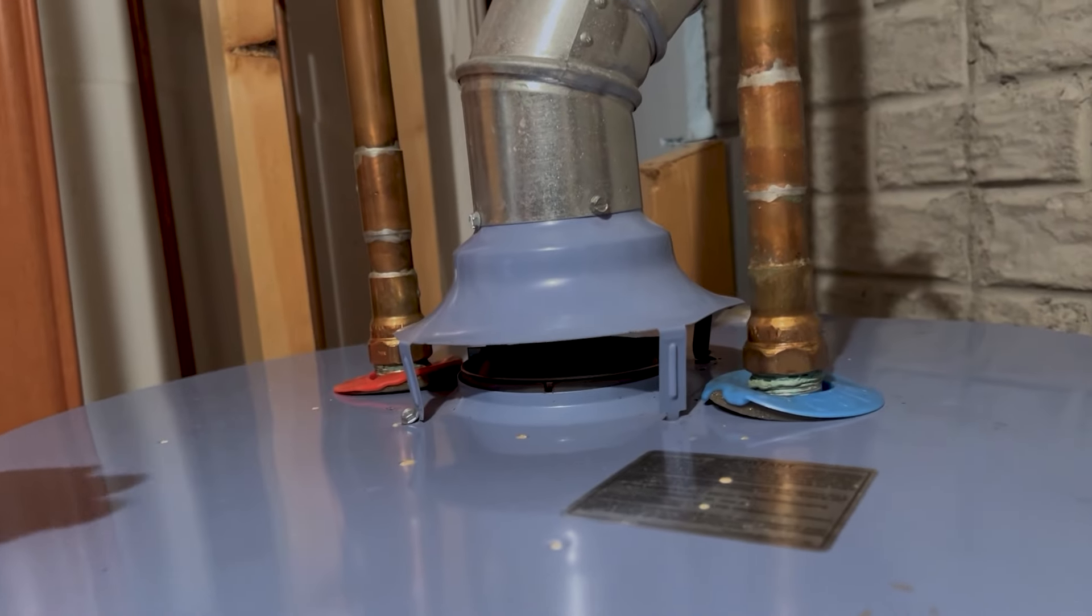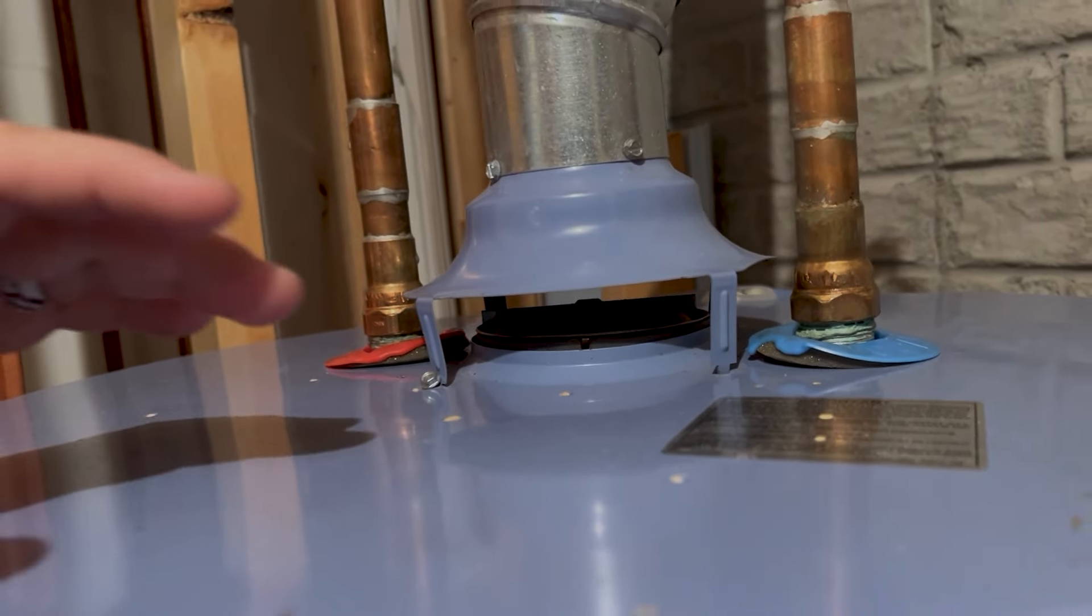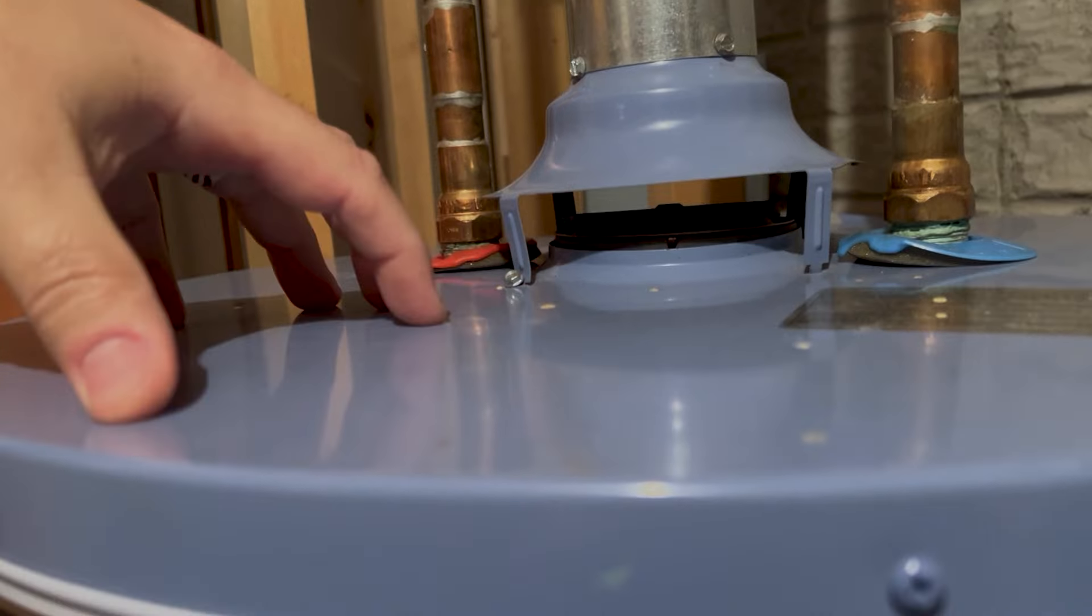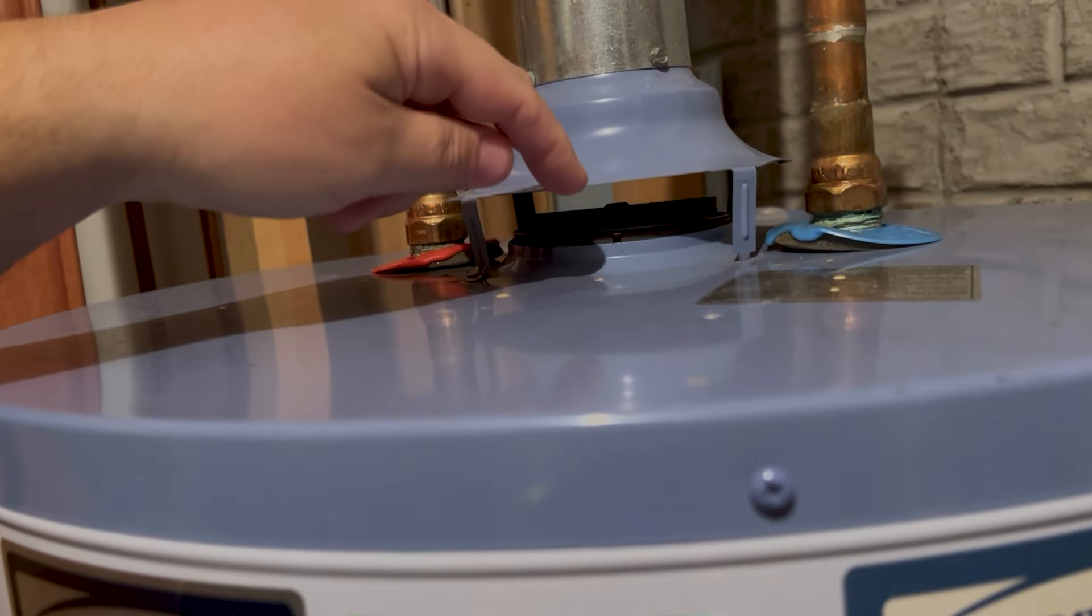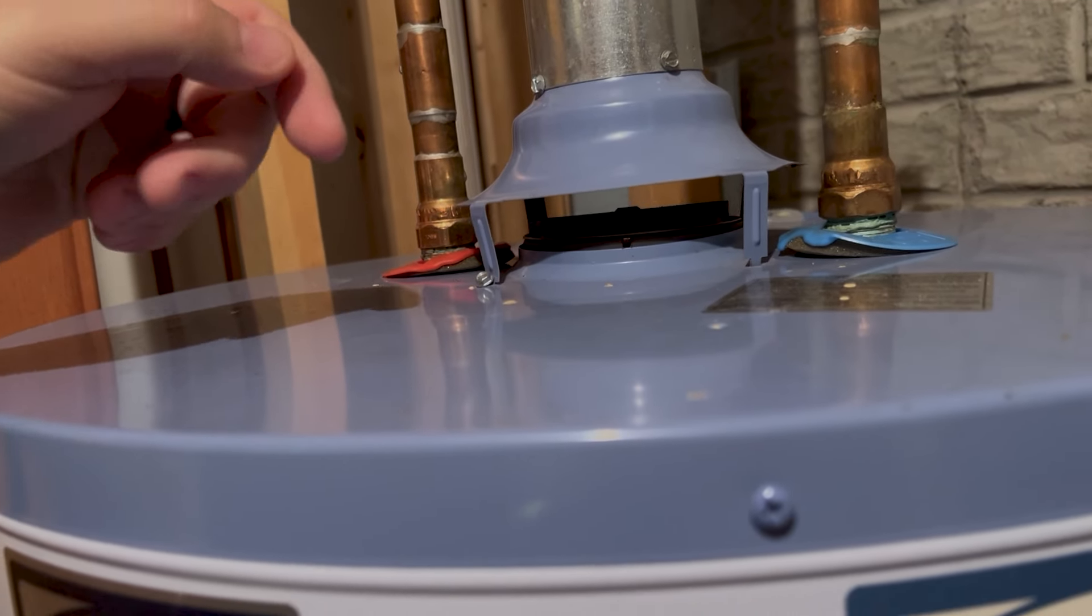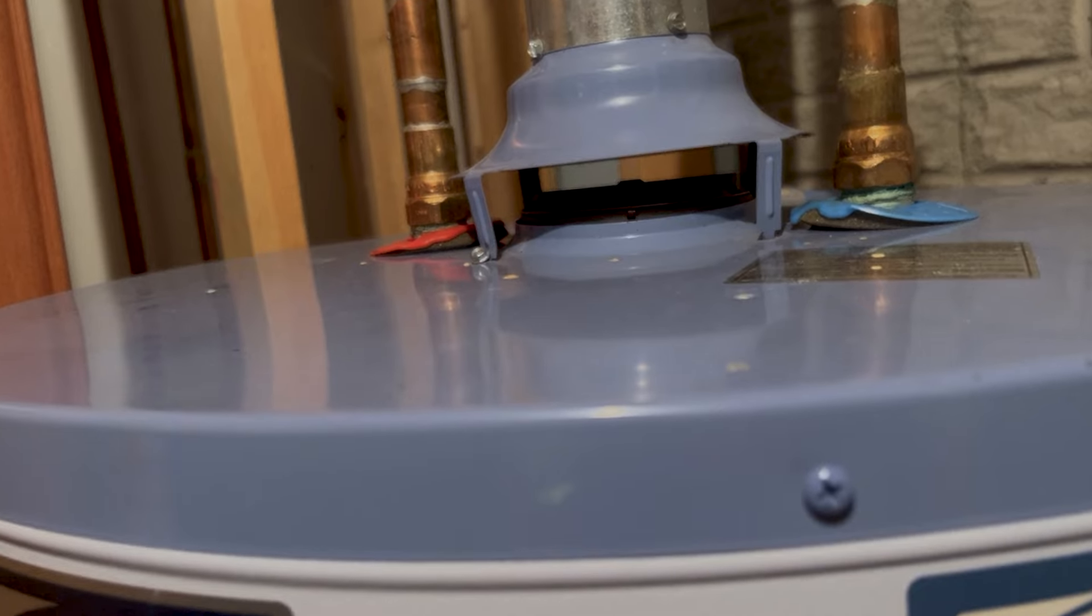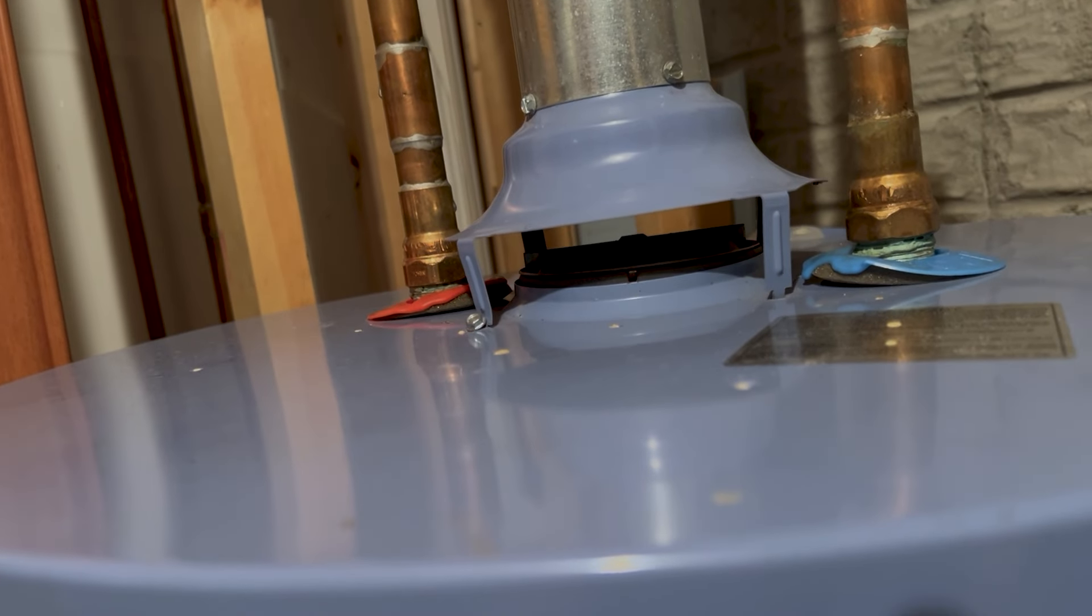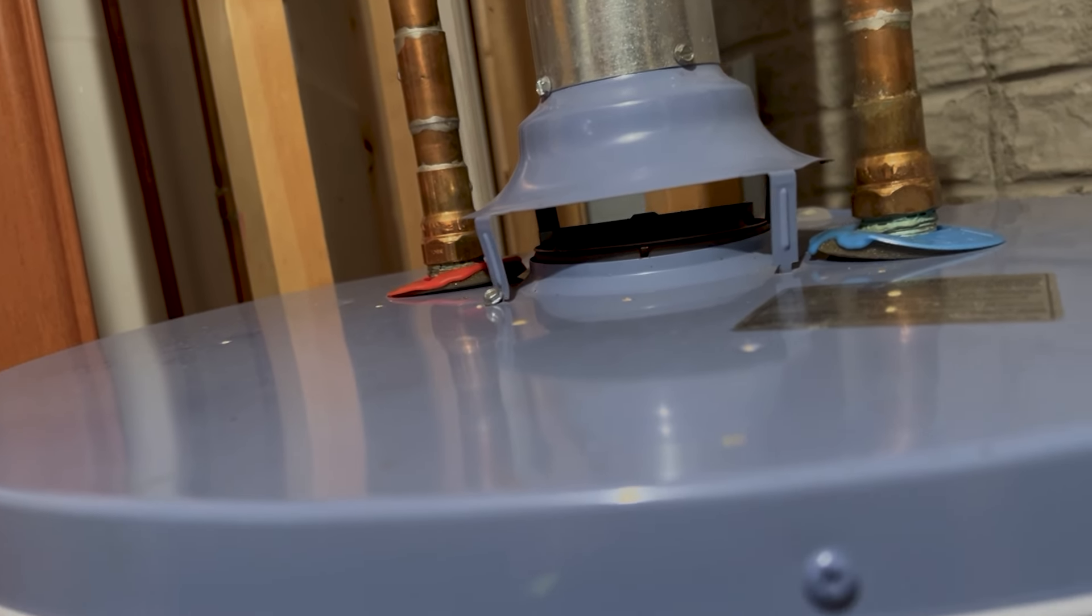But ultimately, the short-term fix for this is to put a carbon monoxide detector right on top of the water heater. That way, if the carbon monoxide is getting pushed back into the space, you're going to be made aware of the carbon monoxide situation and you'll be able to take action or avoid the space.